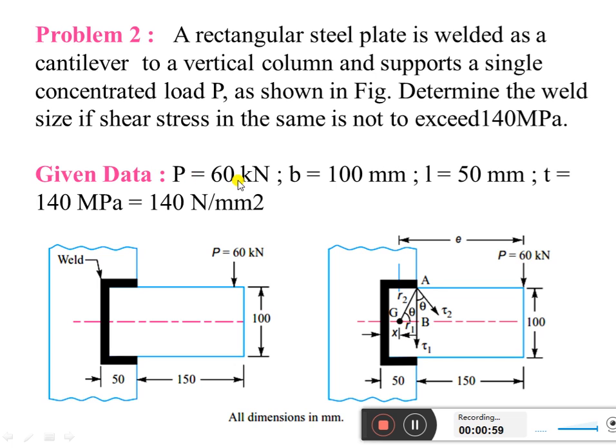This is given data: load P is 60 kilonewton, breadth B is 100 mm, length L is 50 mm, and τ is 140 MPa, that is 140 Newton per mm square.